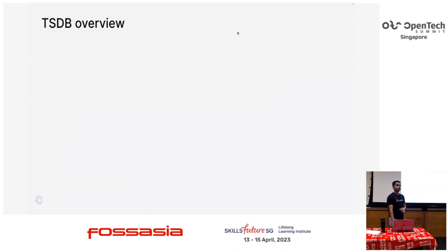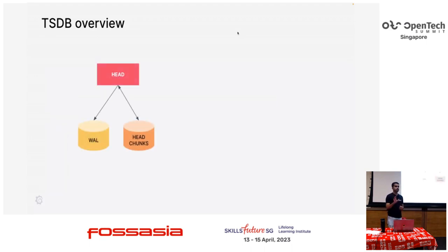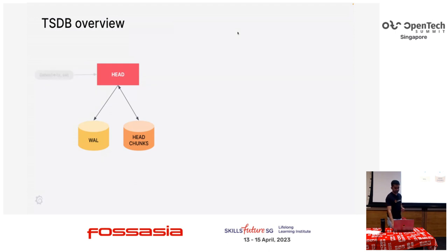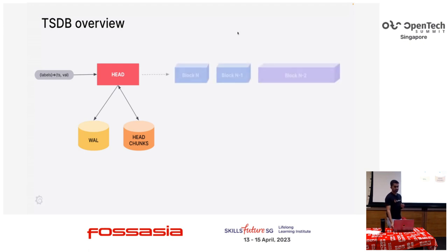Before diving into how it stores data inside a TSDB, let's look at the overview. There is a component called the head block — a component which stores the index of recent data in memory and some things memory-mapped. This is the component that first gets the data in the TSDB. After the head has stored data for some time, we create persistent blocks — immutable blocks which you can store and do queries on. We are going to go inside this block and see how they are created.